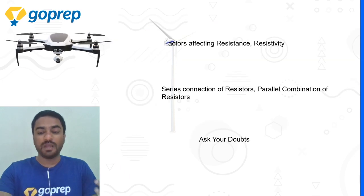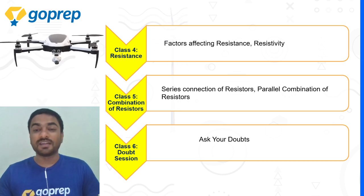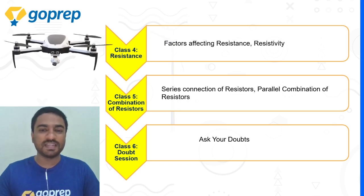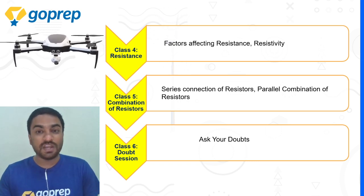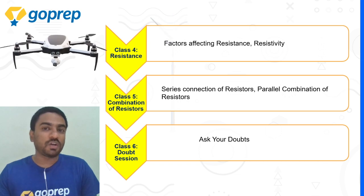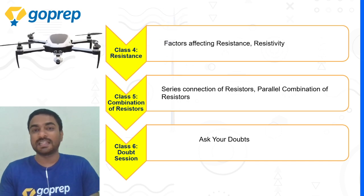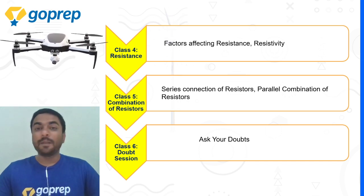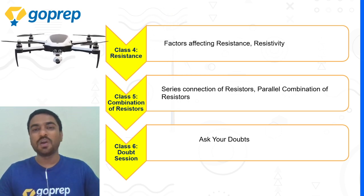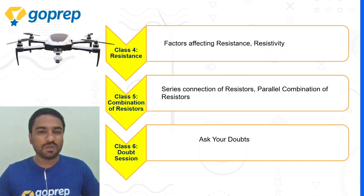Next, we have the concept of Resistance in Classes 4 and 5. This covers series and parallel combinations of resistors, the difference between resistivity and resistance, and the various factors on which resistance depends. Many students think there are only a few factors — length, area of cross-section, temperature, and resistivity — but there are a couple more secret factors affecting the value of resistance, and we will discuss all of them.